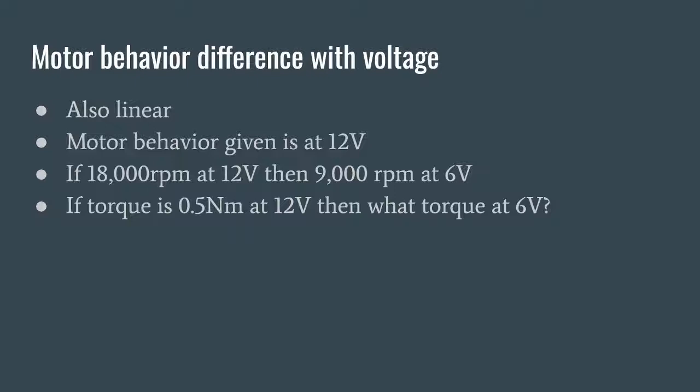How about speed? What if it goes at 18,000 RPM? So let's say the free speed at 12 volts is specced to be 18,000 RPM. At six volts, what's the RPM going to be? 9,000. What about at two volts? That would be 3,000 RPM. Cool. Great.